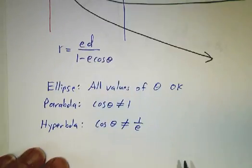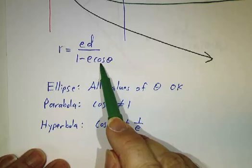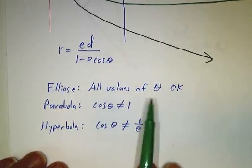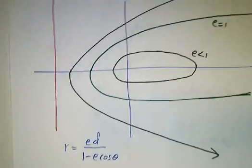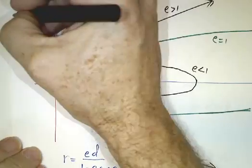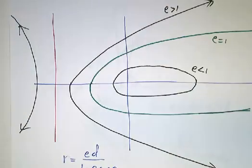Of course, you could try plugging in a value of theta that's smaller than that. Then you'll get cosine theta is bigger than 1 over e, and you get r is negative. So those values of theta with r negative actually give you the other lobe of the hyperbola.